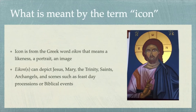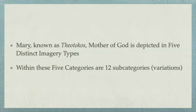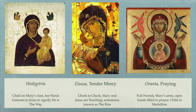We also aim to understand the Eastern roots of the image of Our Lady of Perpetual Help, an image seen quite frequently in many Catholic parishes. The word icon comes from the Greek word meaning a likeness, a portrait, an image. Icons can depict Jesus, Mary, the Trinity, Joseph, saints, archangels, and scenes such as feast days, processions, or biblical events. Mary, known as Theotokos — Mother of God — is depicted in five distinct imagery types, with twelve variations within those five categories. We will cover all five distinct types in this presentation.